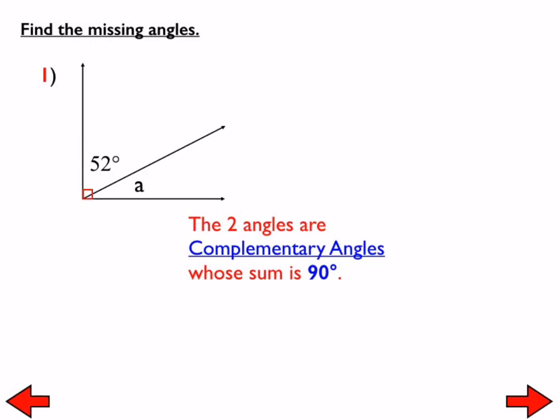So in this picture, we can see that we have complementary angles. We talked about that yesterday. So if those angles are complementary, in other words, if they form a right angle, we should be able to easily find the missing angle A. So what is angle A? Tell me please. 38 degrees. There we go.